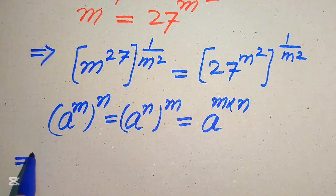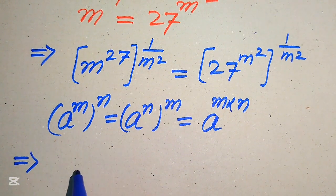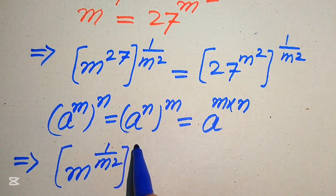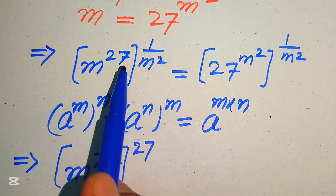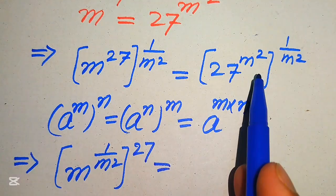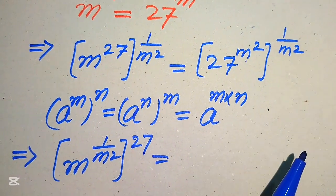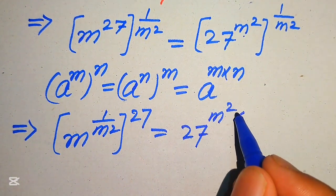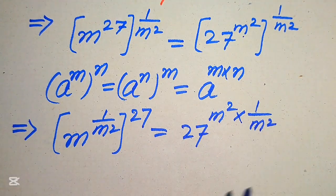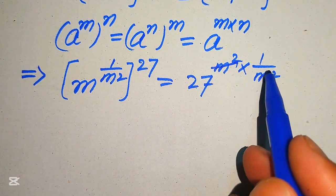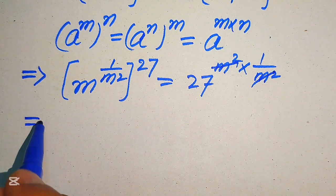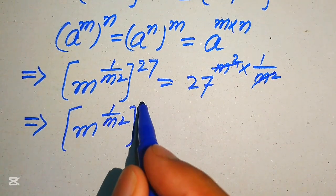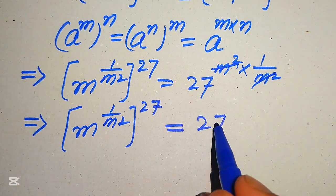In the left hand side, we move 1 over m squared inside the term, giving m to the power of 1 over m squared, whole exponent 27. We interchange the exponents on the left and multiply on the right according to the exponent law, giving 27 to the power of m squared times 1 over m squared. The m squared cancels, giving m to the power of 1 over m squared, whole exponent 27, equals 27.